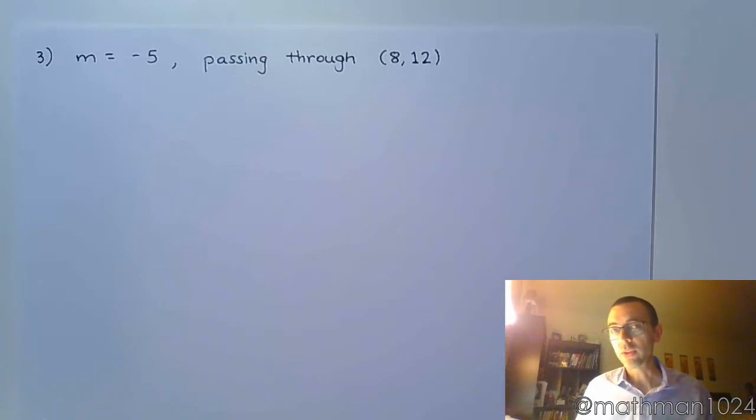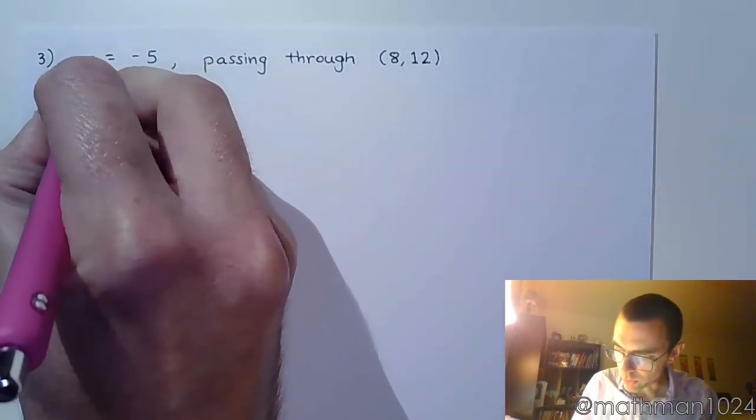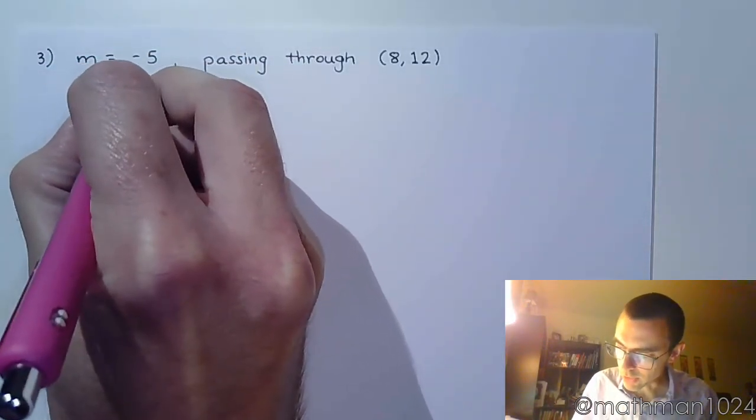In this example, we want to write the equation of a line that has a slope of negative 5 and passes through the point (8, 12). Now, the last two problems that we did, we would start with the slope-intercept form. We just say y equals mx plus b.